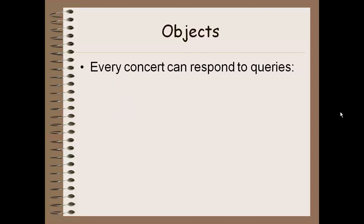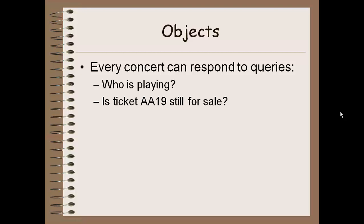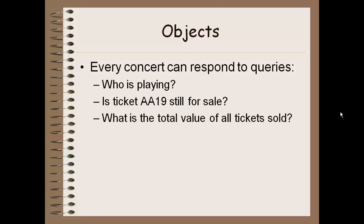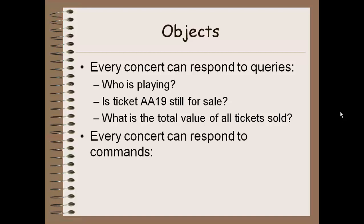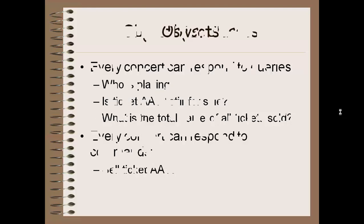Then I'm going to have a bunch of queries I can respond to about that concert. For example, who is playing at the concert? — in which case I'd return the band name attribute. Is ticket AA19 still for sale? What's the total value of all the tickets I've sold so far? All these things are questions where we're going to get a piece of information back about that particular object. I can also respond to commands that allow me to change my attributes — for example, sell ticket AA19, which is going to change that ticket from unsold to sold.